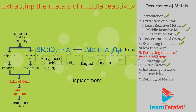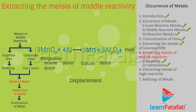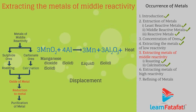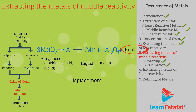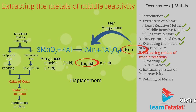In this displacement reaction, aluminum, being more reactive than manganese, displaces manganese atoms to form aluminum oxide and gives manganese. Since the reaction is exothermic, the large heat produced causes melting of manganese.